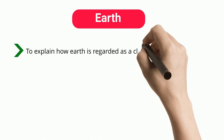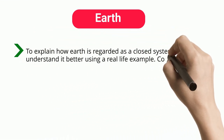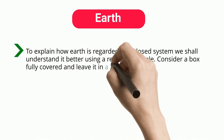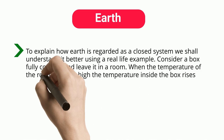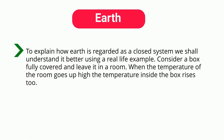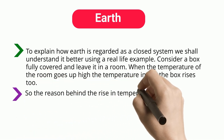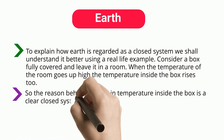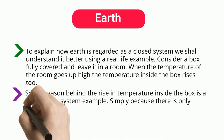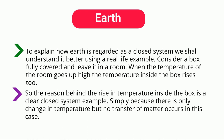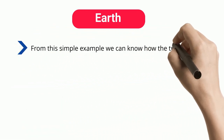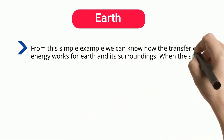To explain how Earth is regarded as a closed system, consider a box fully covered and left in a room. When the temperature of the room goes up high, the temperature inside the box rises too. The reason behind the rise in temperature inside the box is a clear closed system example, because there is only a change in temperature but no transfer of matter occurs.